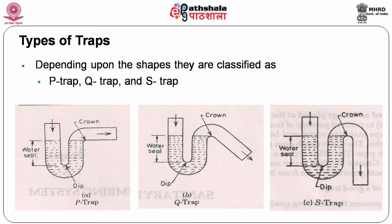The figures show the different types of traps. The P-trap looks like an inverted P, with the water seal maintained between the weir and the bottom. The depth of water seal should be 20 mm to 100 mm. The Q-trap looks like Q and the S-trap looks like S.